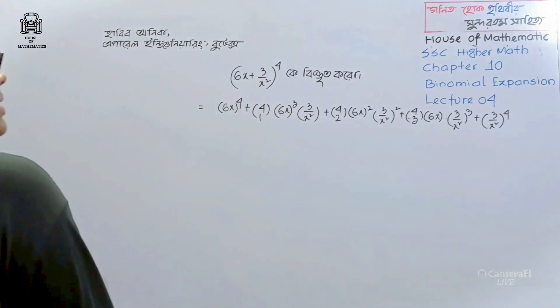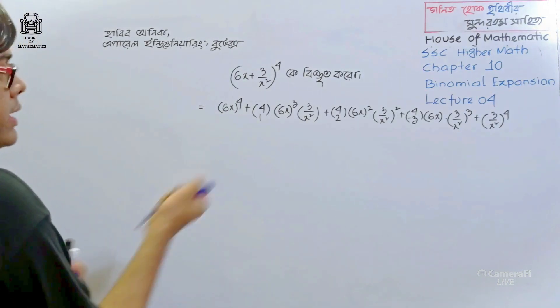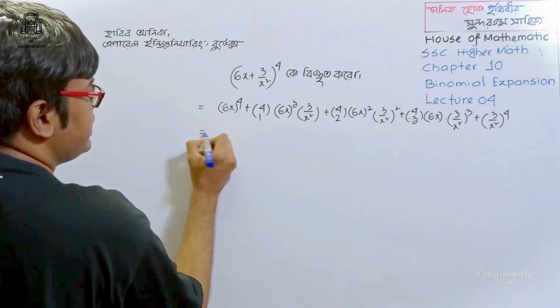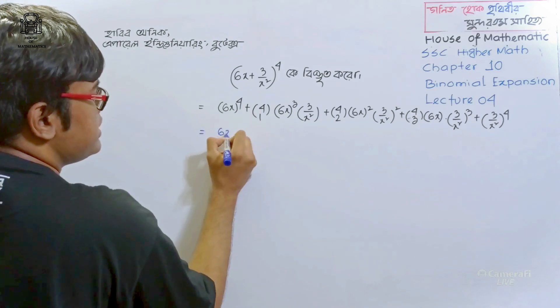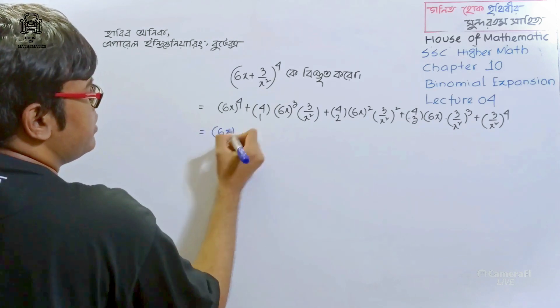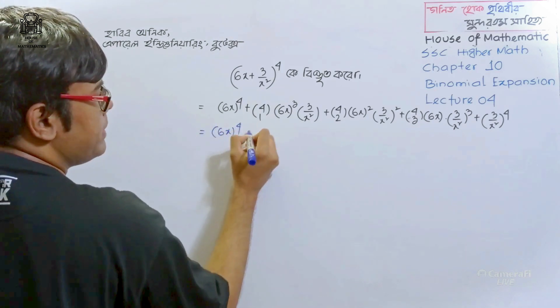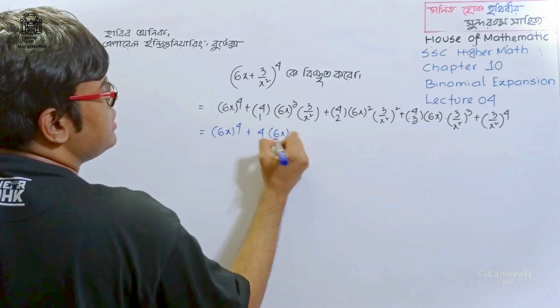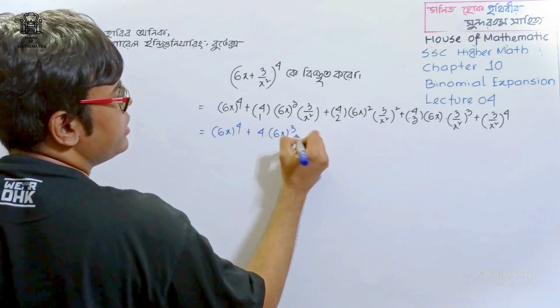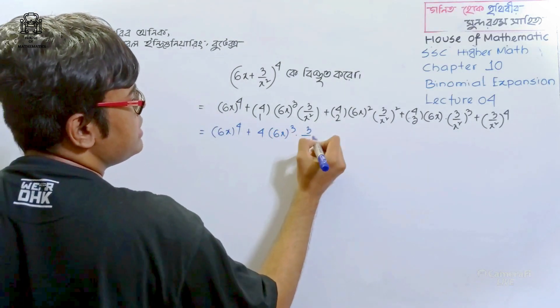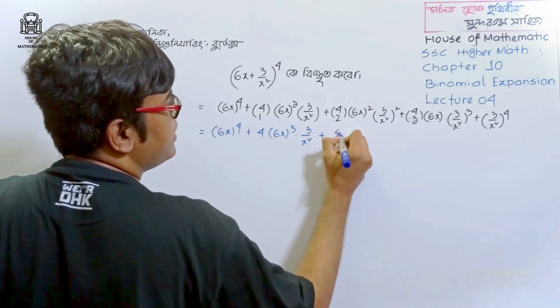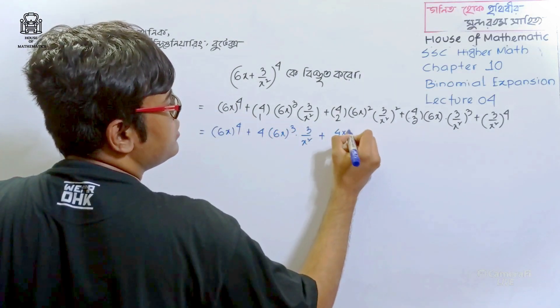We can see power 4: C(4,0)·6x cubed·(3/x²).